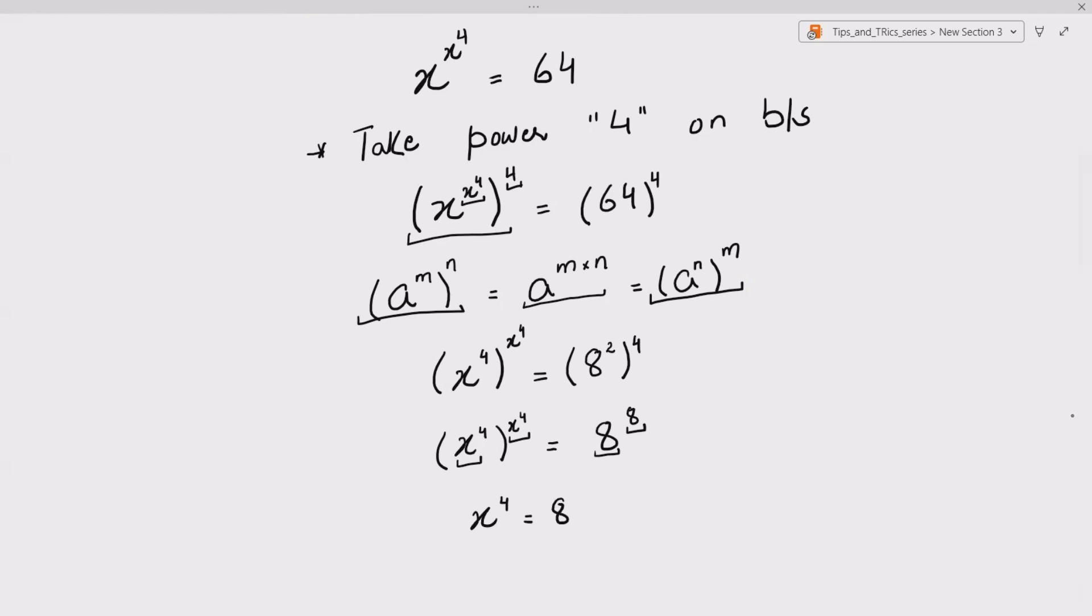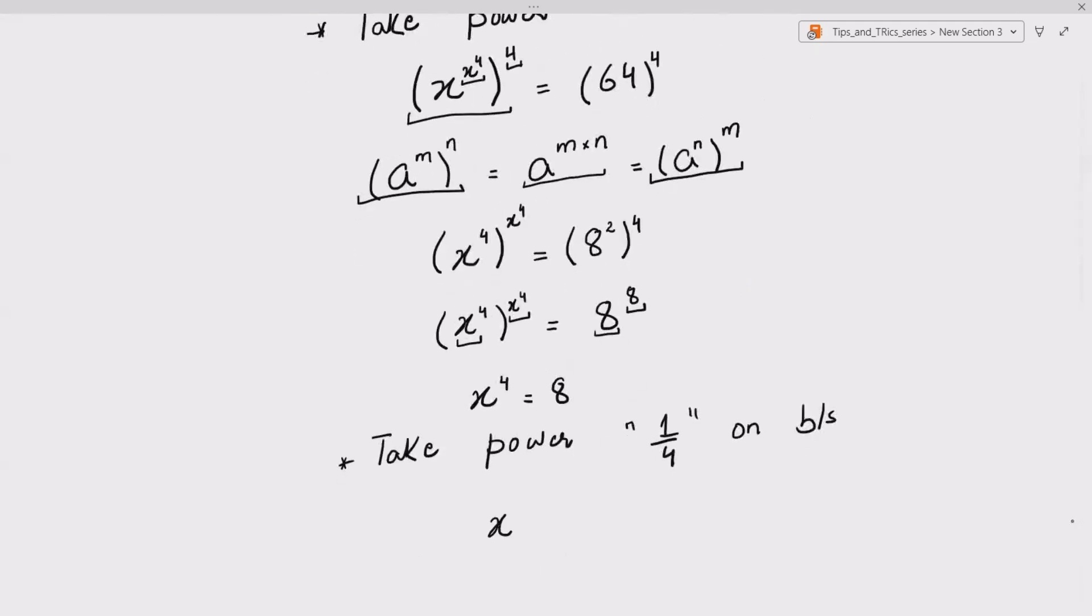Now x raised to the power 4 equals 8. We now take power 1 over 4 on both sides, i.e. we take 4th root, so x raised to the power 4 to the power 1 upon 4 equals 8 raised to the power 1 upon 4.